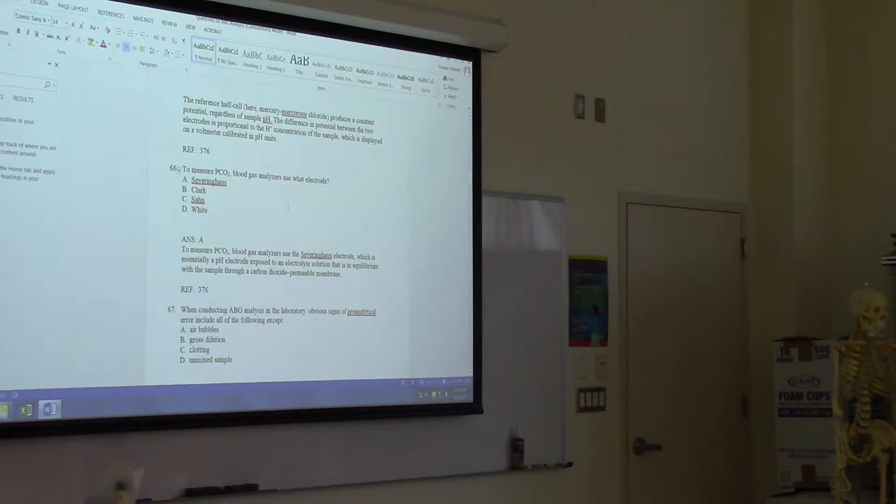When conducting ABG analysis in the laboratory, obvious signs of pre-analytical error include all of the following except. So pre-analytical, like before you even put it in the machine, what could have happened that'll mess up the values? Air bubbles, clotting, unmixed sample. What would gross dilution mean? Gross dilution is the exception. Air bubbles mess it up, clotting messes it up, not mixing the sample correctly messes it up.